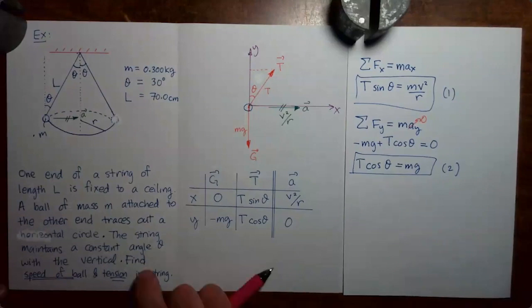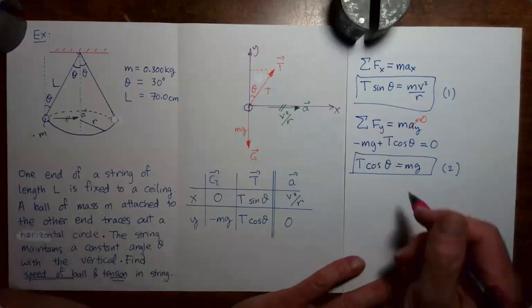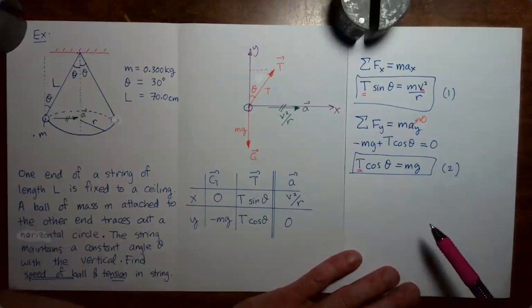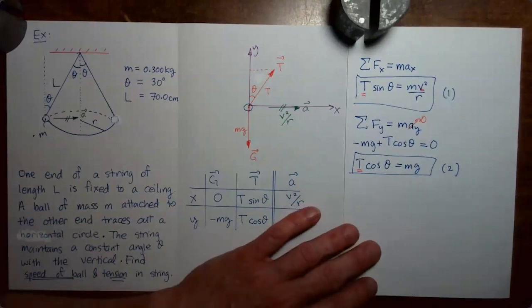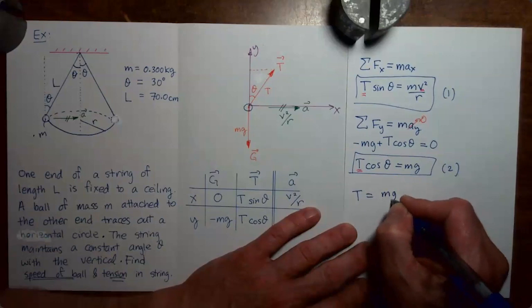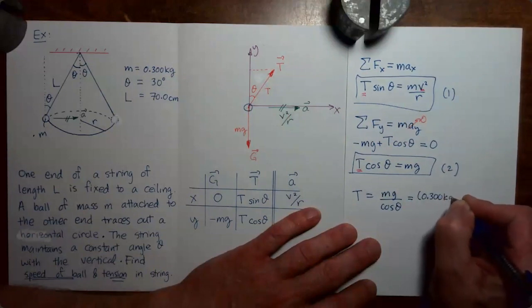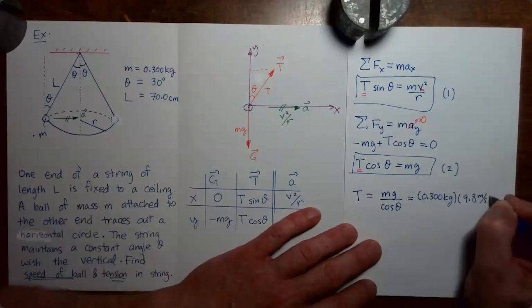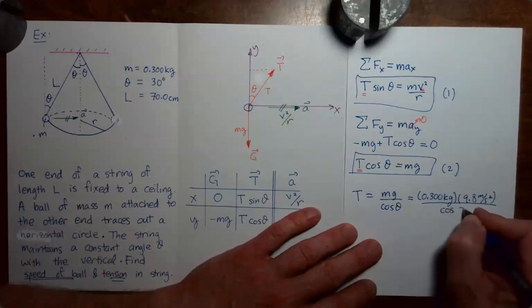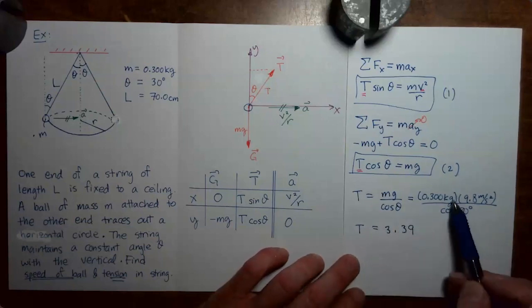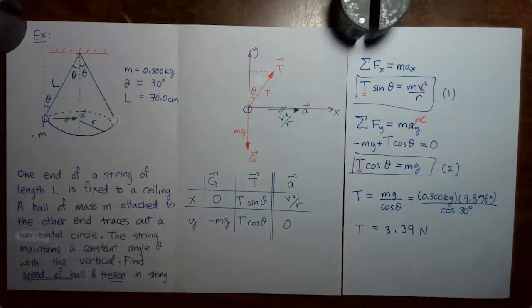Coming back to the question, we want the speed of the ball and the tension in the string. Equation 2 has only tension as an unknown, so let's use it to solve for tension first: tension equals mg over cosine theta. Substituting — mass is 0.3 kilograms, g is 9.8 meters per second squared, and the angle is 30 degrees — I get tension equals 3.39 newtons. Kilograms times meters per second squared is a newton, so the units check out. Now we have the tension.